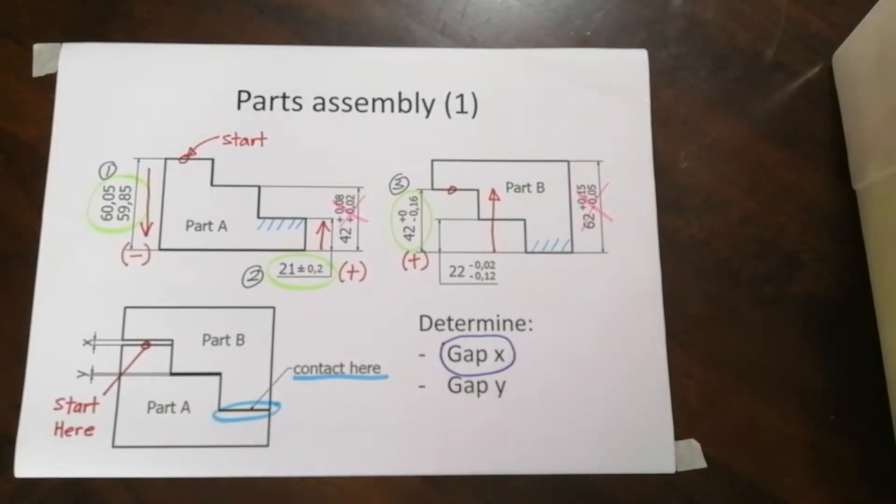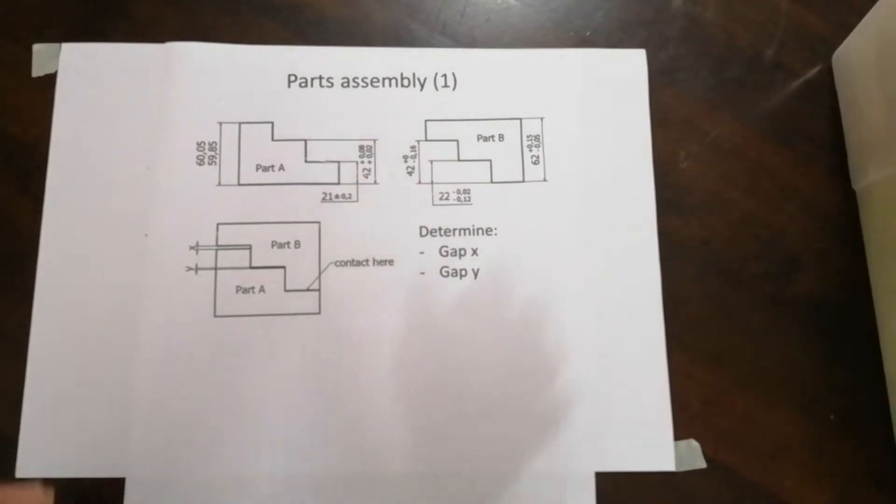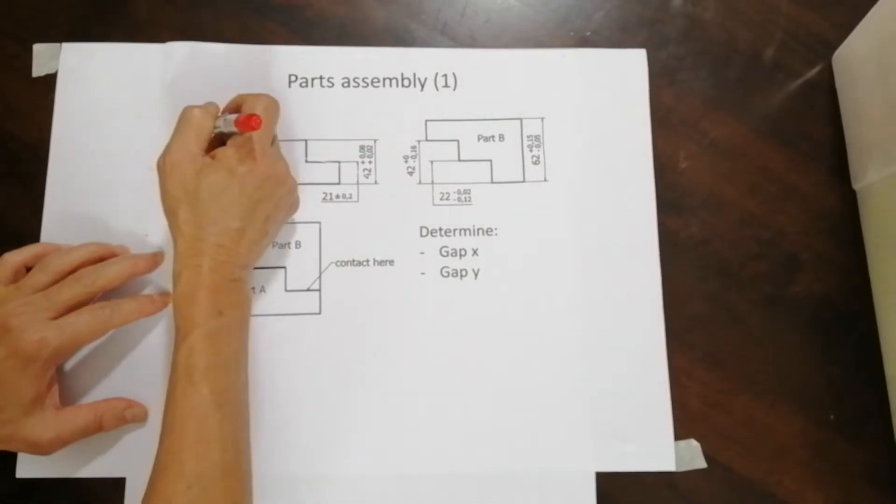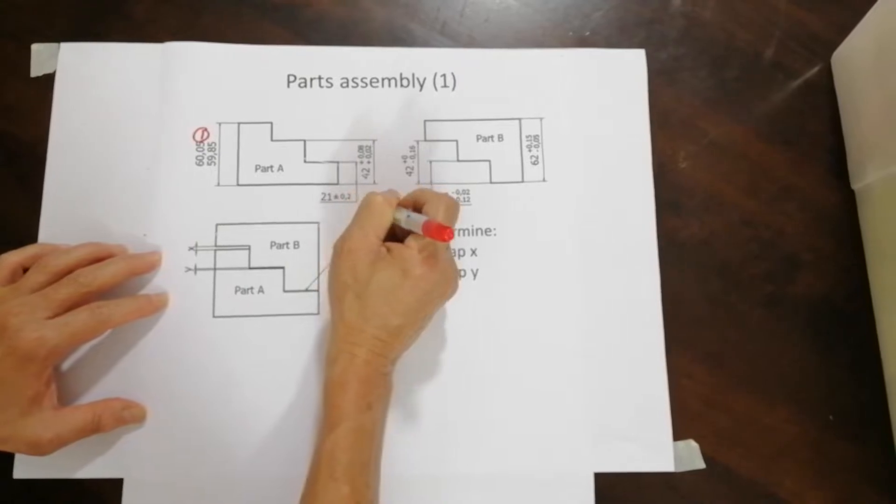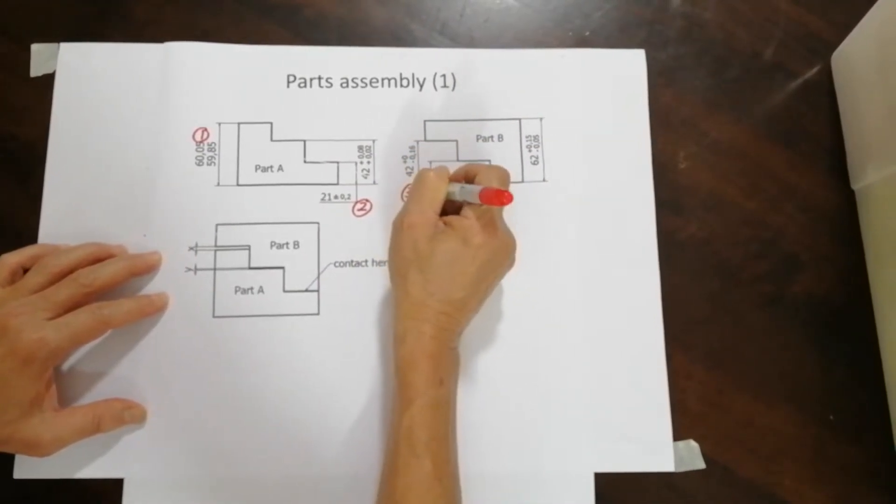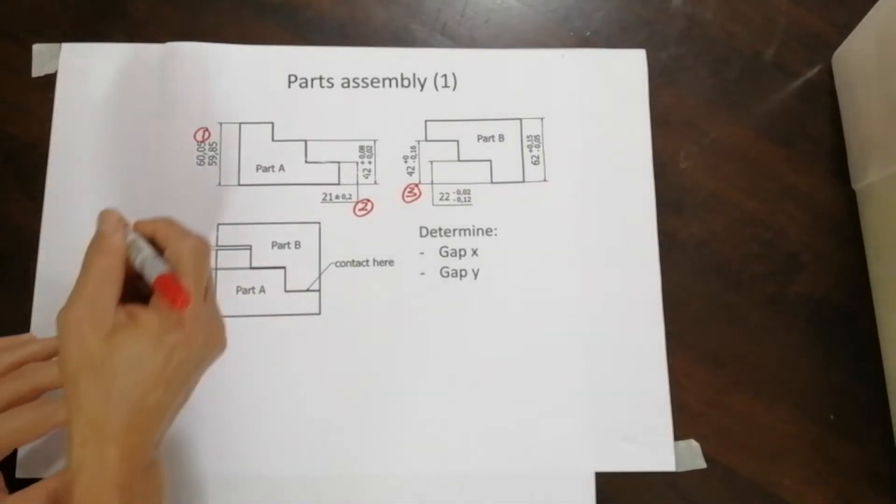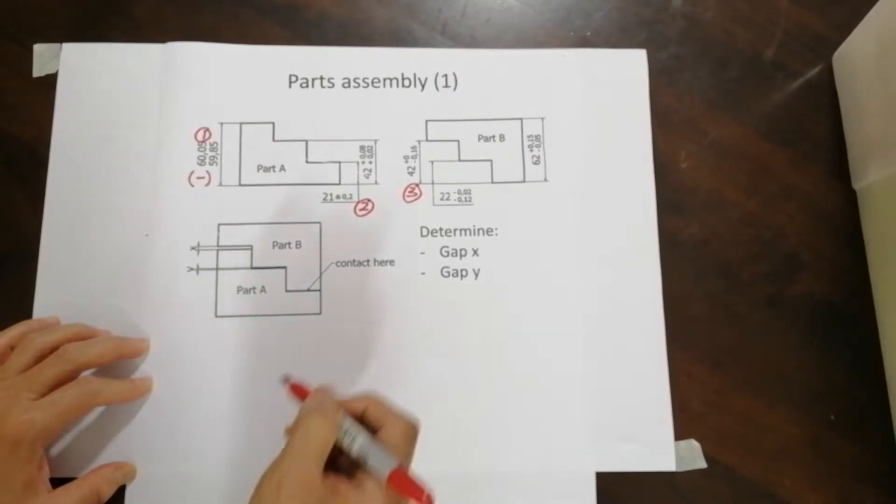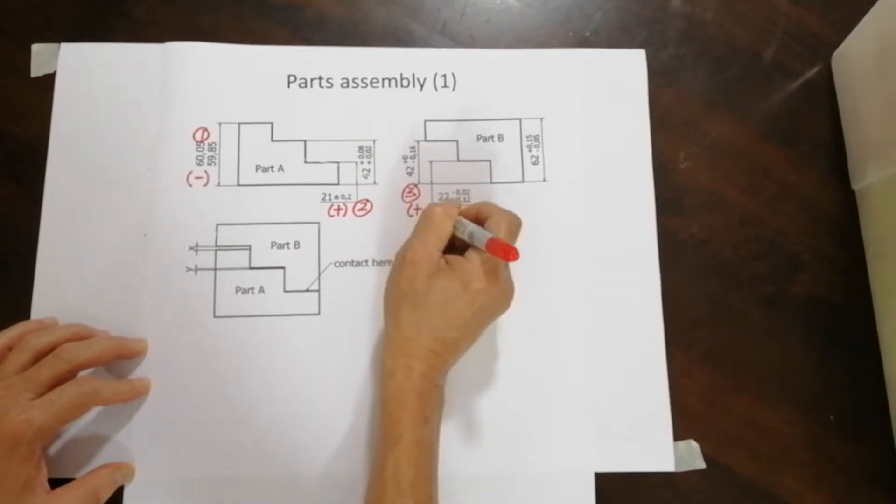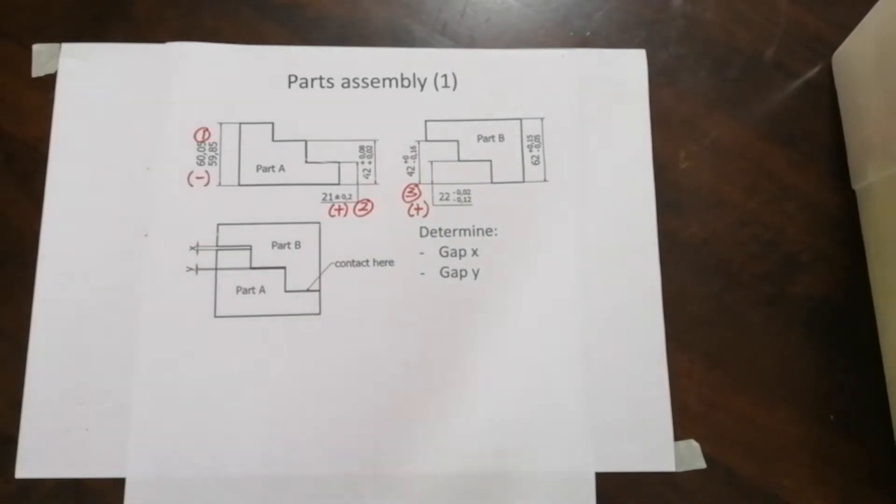So let's work on the analysis now. I just want to put back the key parameter here. This dimension is involved, this is the second dimension, and this is the third dimension. This first dimension should be negative, second dimension is positive, and third dimension is also positive. These are the three parameters, the key parameters you gather from the earlier diagram.